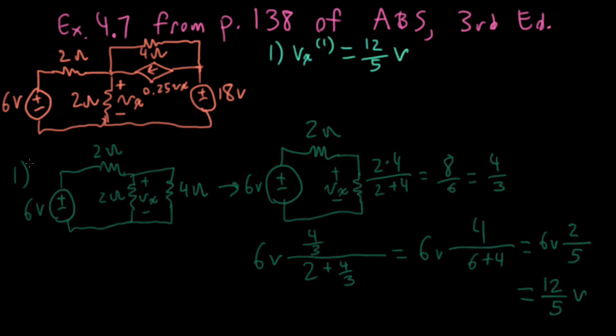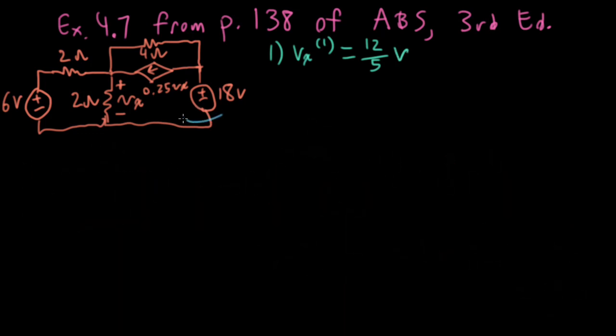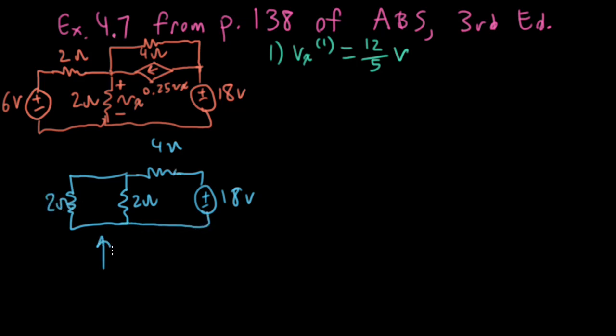All right so next in line let's look at this 18 volt source when we do that we're going to open up this current source and we're going to short the 6 volt source. Okay so I'll have my 18 volt source here, we'll have 4 ohms sitting here and then we essentially have two 2 ohm resistors in parallel so this set of resistors here can be simplified to a 1 ohm resistance and we're measuring the voltage here.